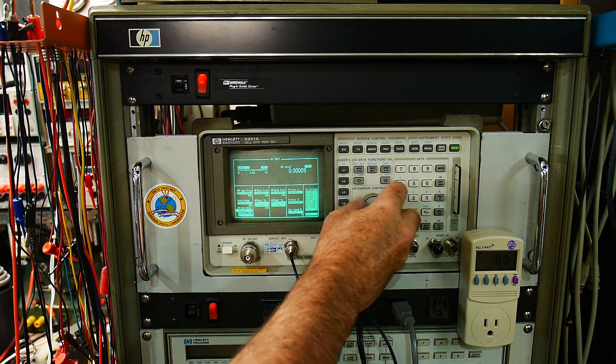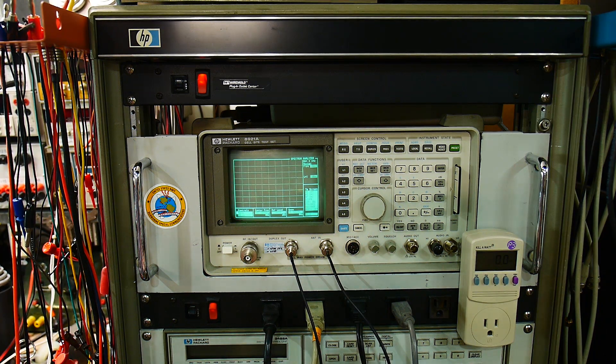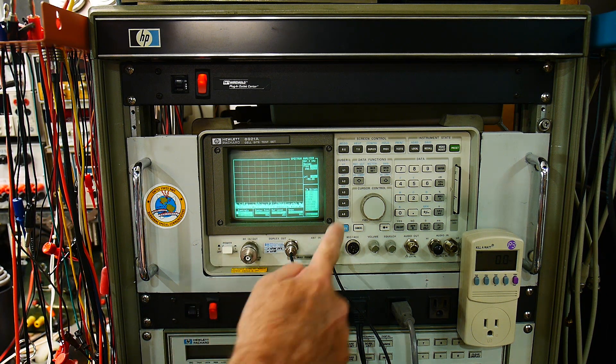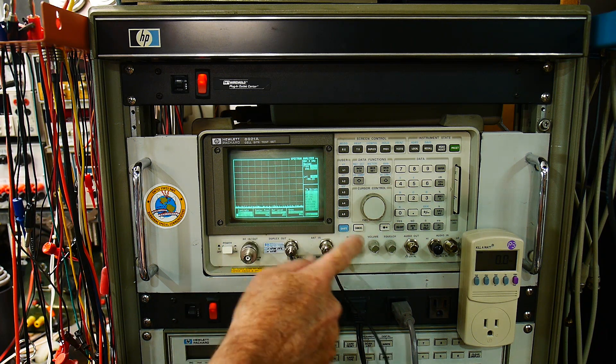We're going to be using the spectrum analyzer. We'll say spectrum analyzer. It says, where do you want the input to be? RF in or antenna. We want antenna. So we'll click that. Now it's coming in here.